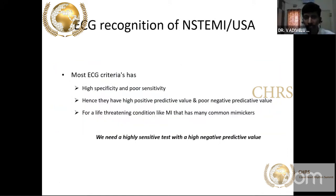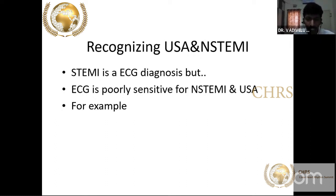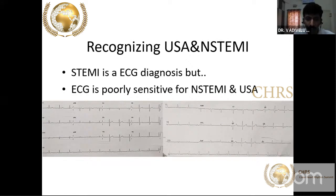In non-ST elevation acute coronary syndrome, ST segment depression or T wave inversion is present. ST segment depression is divided into upsloping, horizontal, and downsloping. Upsloping ST segment depression is less dangerous compared to horizontal or downsloping. Upsloping ST segment depression measured at 80 milliseconds after the J point of more than 1.5 to 2 mm is significant.